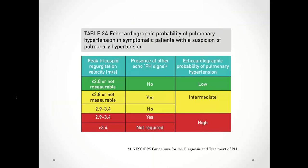This is an approach to using TRV to establish a probability of pulmonary hypertension in your echo report. The ESC breaks it down into several cutoffs: less than 2.8 meters per second, 2.9 to 3.4, and over 3.4 meters per second. They then factor in whether there are other echo signs of PH present. Based on that composite, they determine the echocardiographic probability of PH.